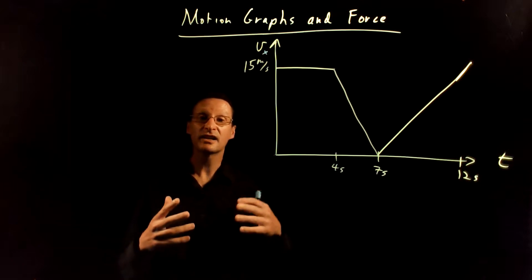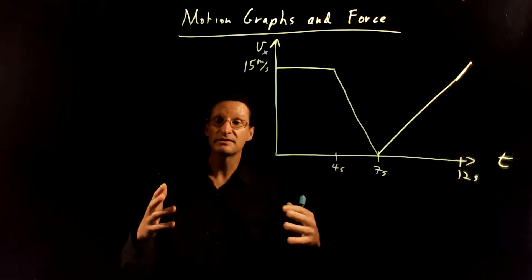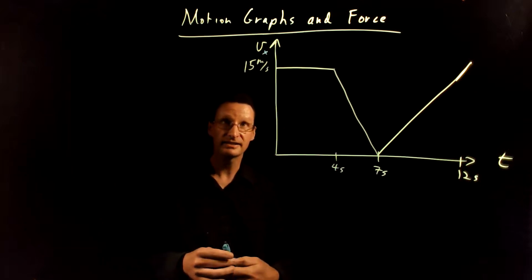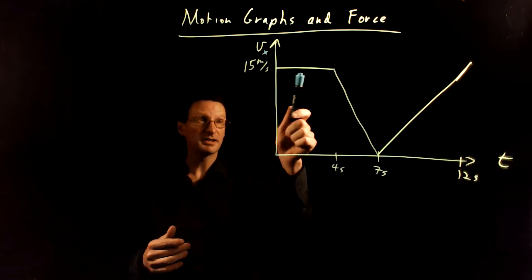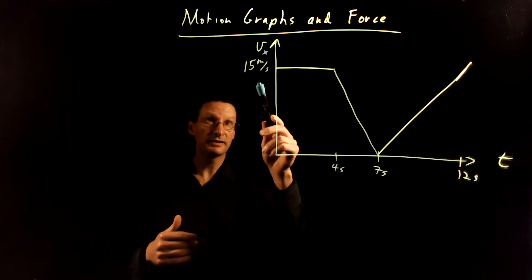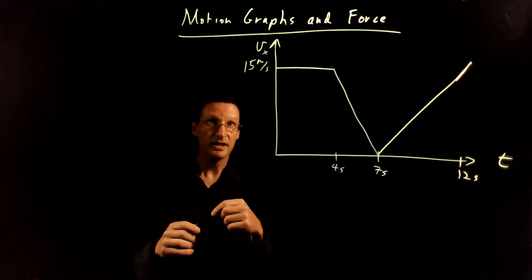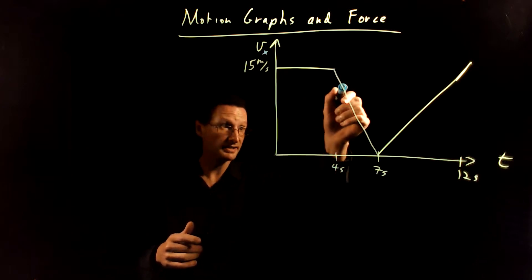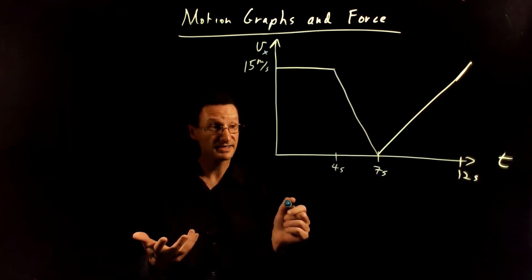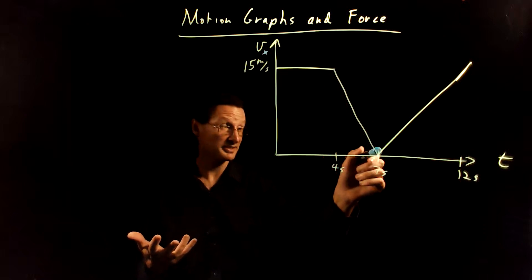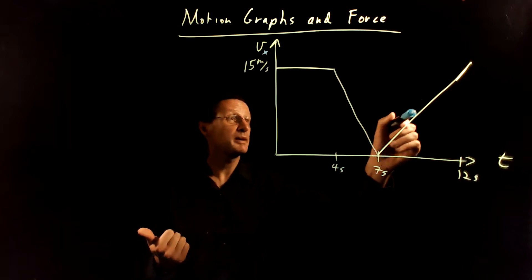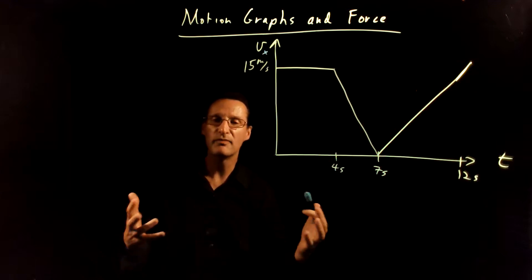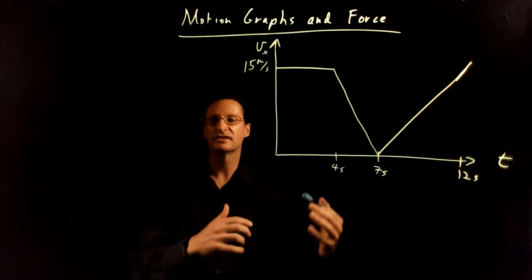Hey there, awesome physics students. Let's talk about the connection between motion graphs and the net force on an object. Imagine you have a velocity-time graph where a car is traveling in the positive x direction at 15 meters per second for 4 seconds, then hits the brake and slows down over 3 seconds to a stop, then speeds back up again to 15 meters per second. What can we learn from this in terms of net force?